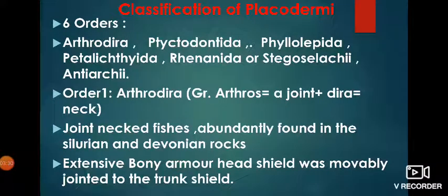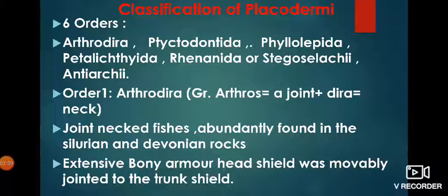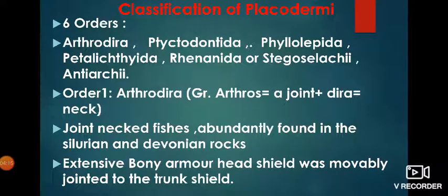The second order is Ptyctodontida — P-T-Y-C-T-O-D-O-N-T-I-D-A, where the P is silent — and its example is Ramphodopsis and Ptyctodontids. The third order is Phyllolepida, and its example is Phyllolepsis — P-H-Y-L-L-O-L-E-P-S-I-S. The fourth order is Petalichthyida — P-E-T-A-L-I-C-H-T-H-Y-I-D-A — and its examples are Lunaspis and Macropetalichthys.